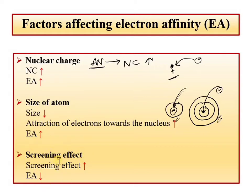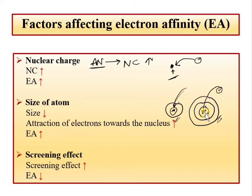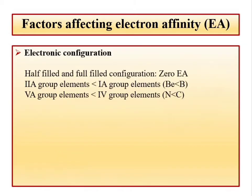If we look at the screening effect, it depends upon the number of shells. The more the number of shells, the greater the screening effect. The inner electrons repel the outer shell electrons, so they prevent incoming electrons from being attracted. Therefore, as the screening effect — or shielding effect — increases, electron affinity decreases. So: higher nuclear charge → more EA; smaller size → more EA; more screening effect → less EA.